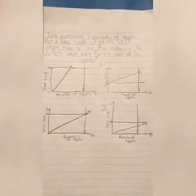Jaina purchases five pounds of apples for a total cost of four dollars. Which graph has a line that represents the correct unit rate for the cost of the apples?